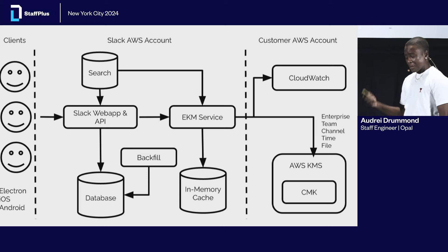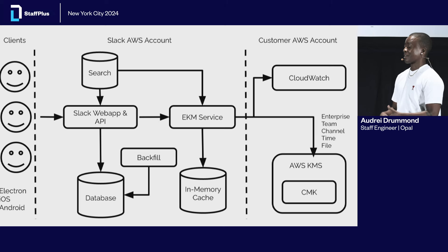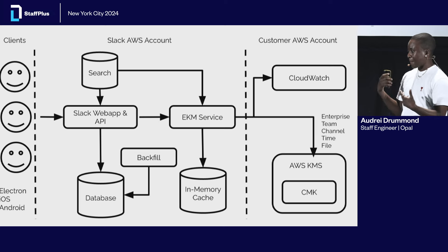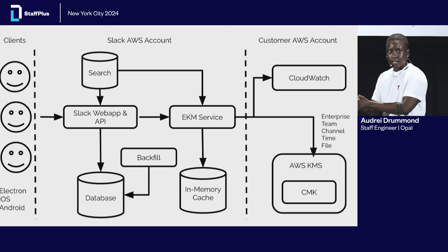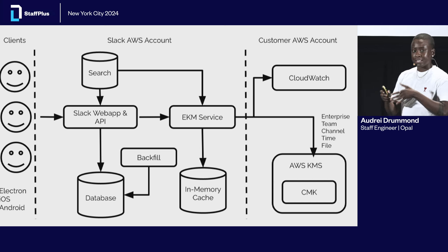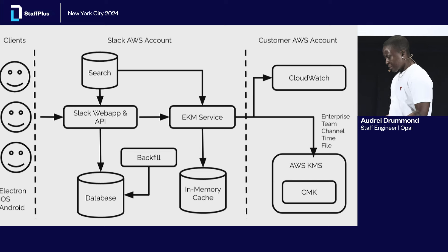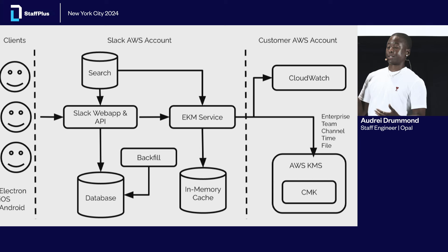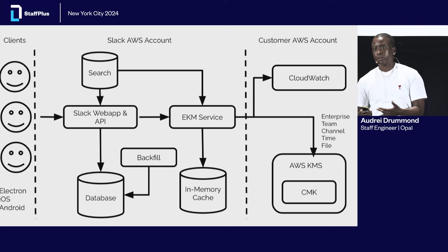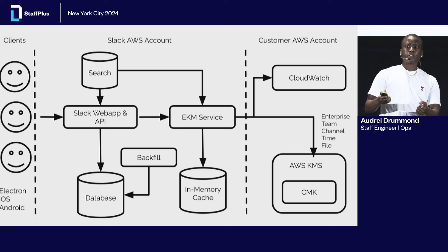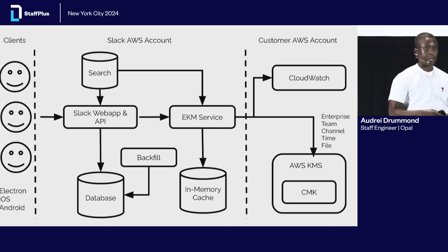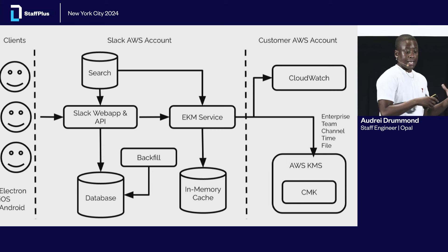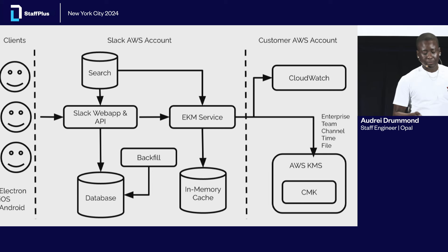We had multiple clients to worry about, we had to think about how search should work, and we had to think about backfills — so think about customers that turn on EKM one day and all their previous messages and files that need to be encrypted. We wanted to make sure things were fast, so we had to think about caching. And lastly, while customers could see their keys being used, they wanted the ability to see an immutable log that Slack is actually doing what they say — so we had CloudWatch there as well.